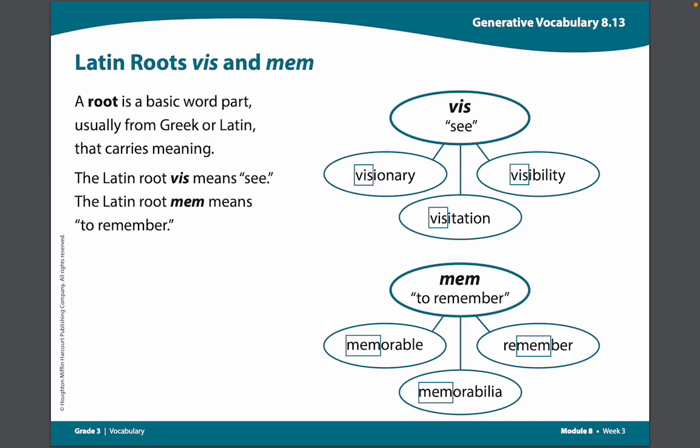Now let's look at the word visionary. It begins with the syllable vij, followed by the syllable on, then the syllable air, and ending with the syllable e. Visionary. When you blend all four syllables together, you get the word visionary. A visionary is someone who has great insights or can see the potential for something that others cannot.